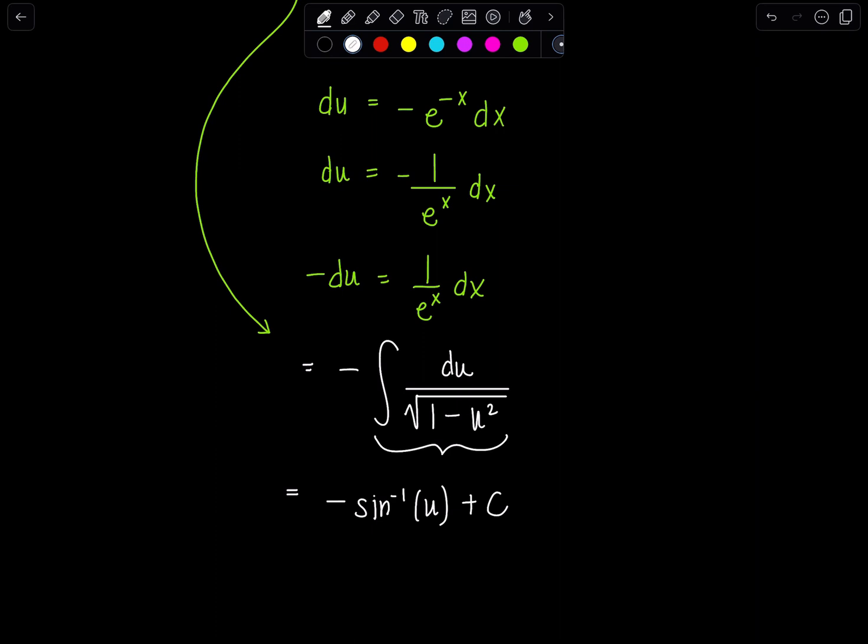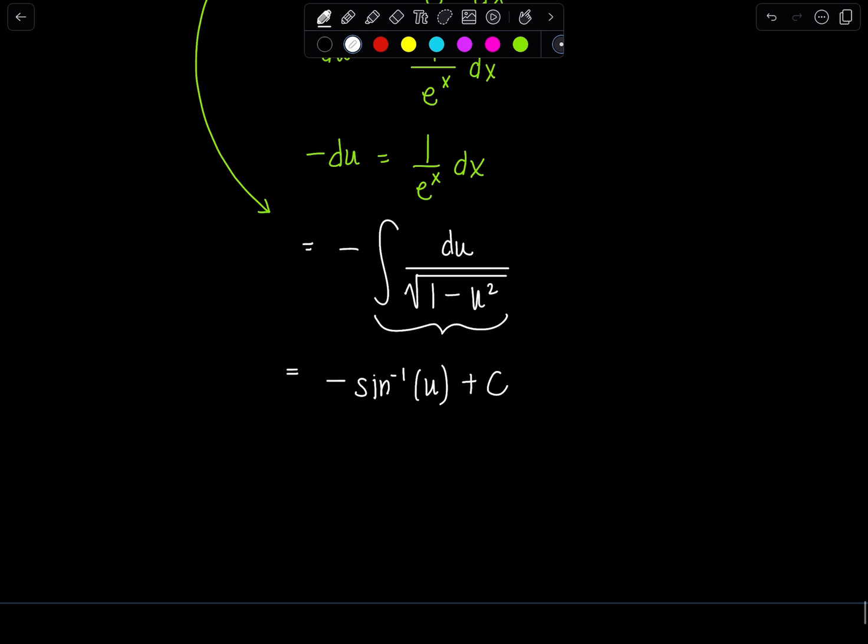Put plus c immediately as well. Everything immediately, okay? Don't delay. There's no time. And then just go back, replace u with the original variable. In this case, it was e to the negative x. So this is negative sine inverse of e to the negative x plus c.